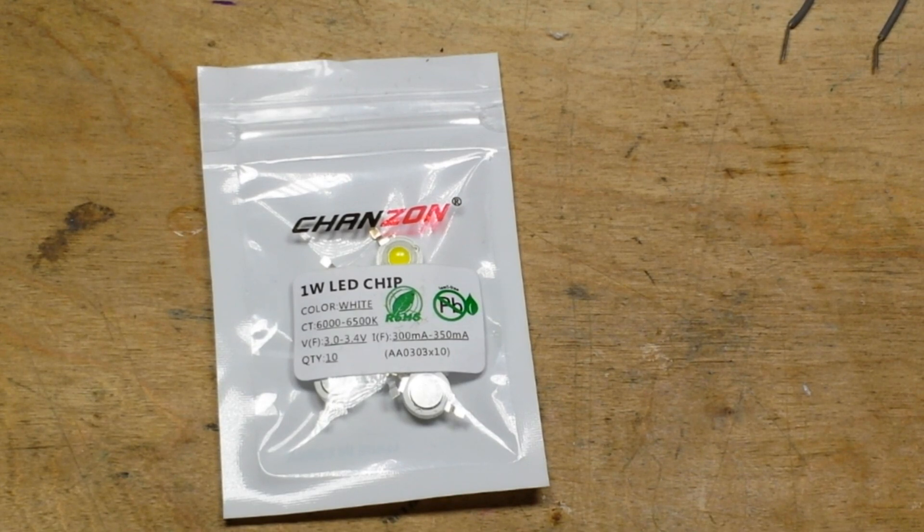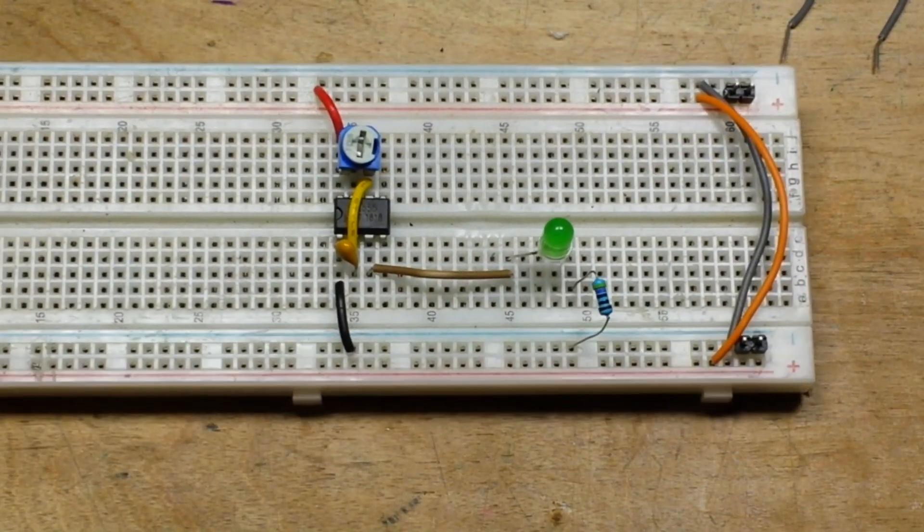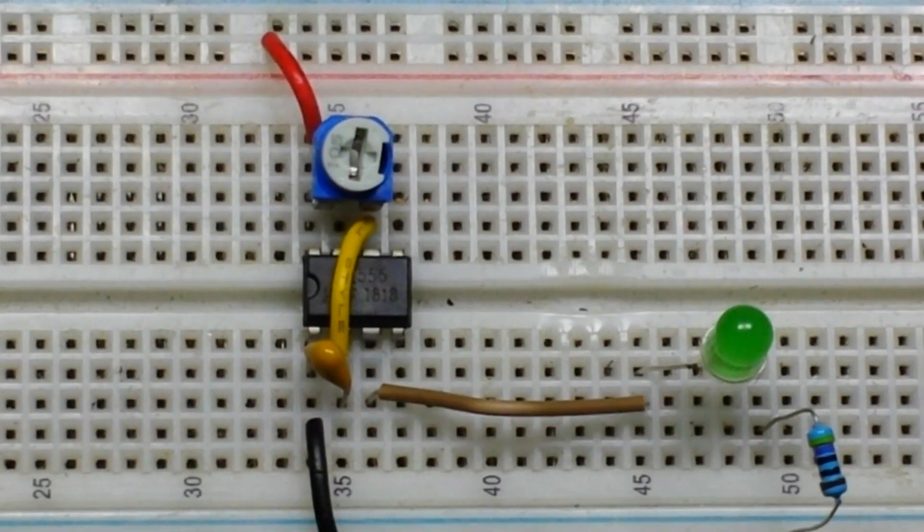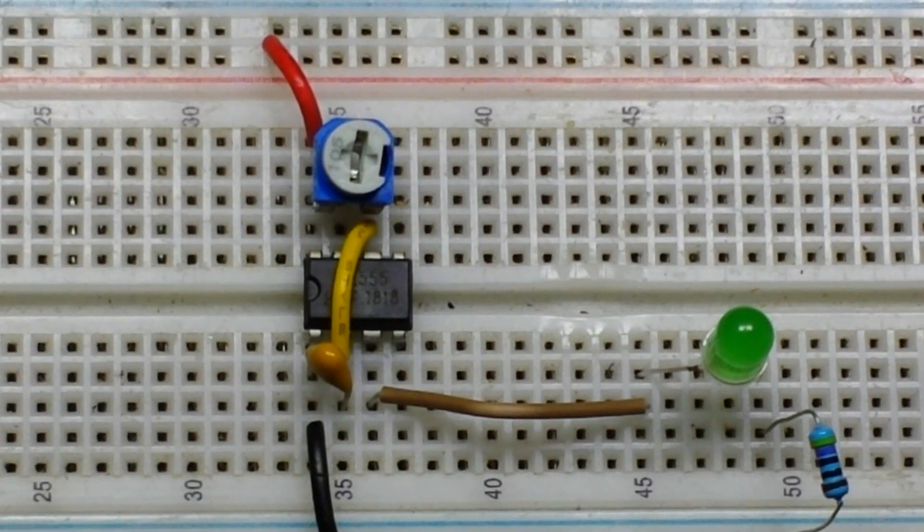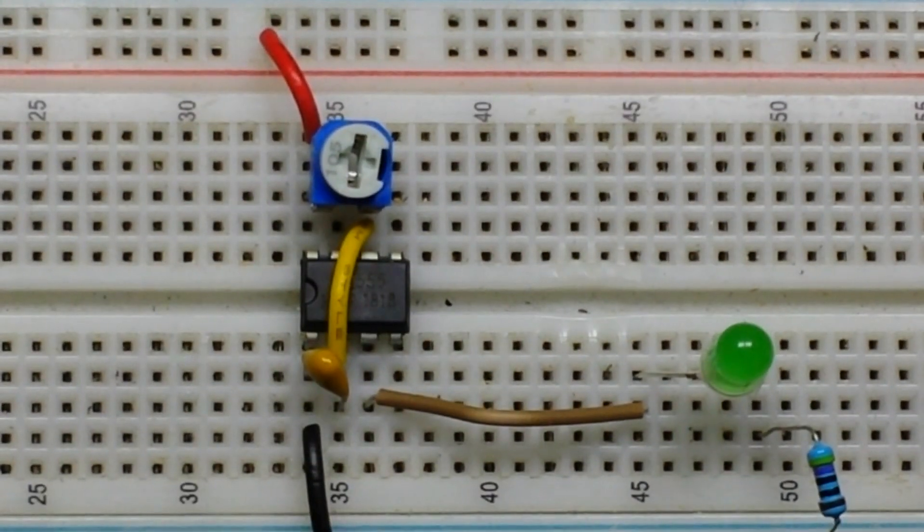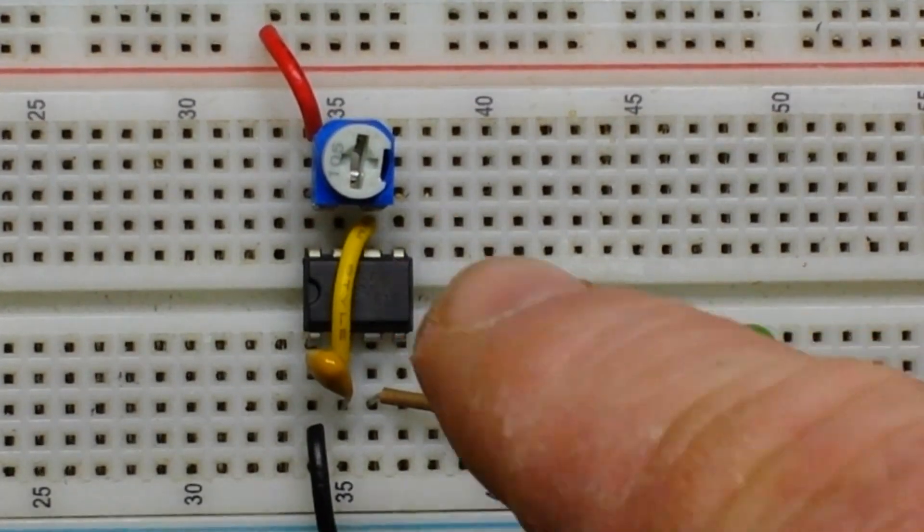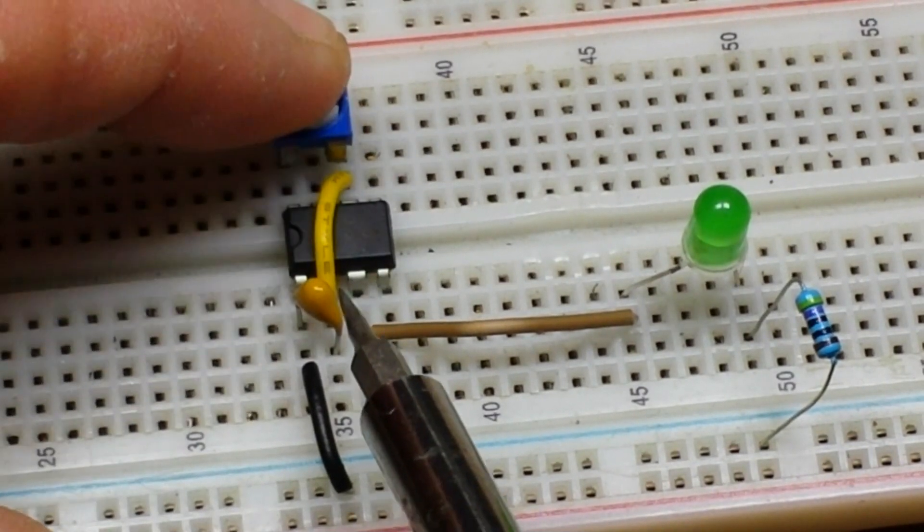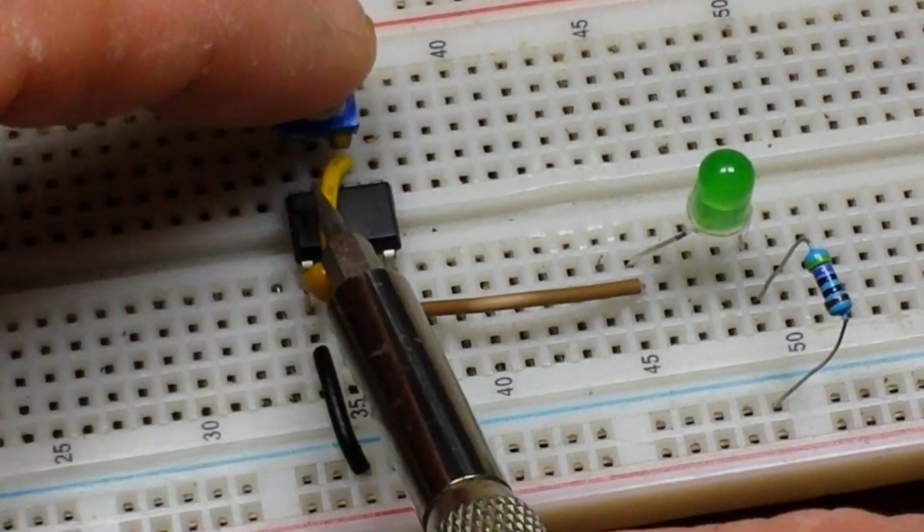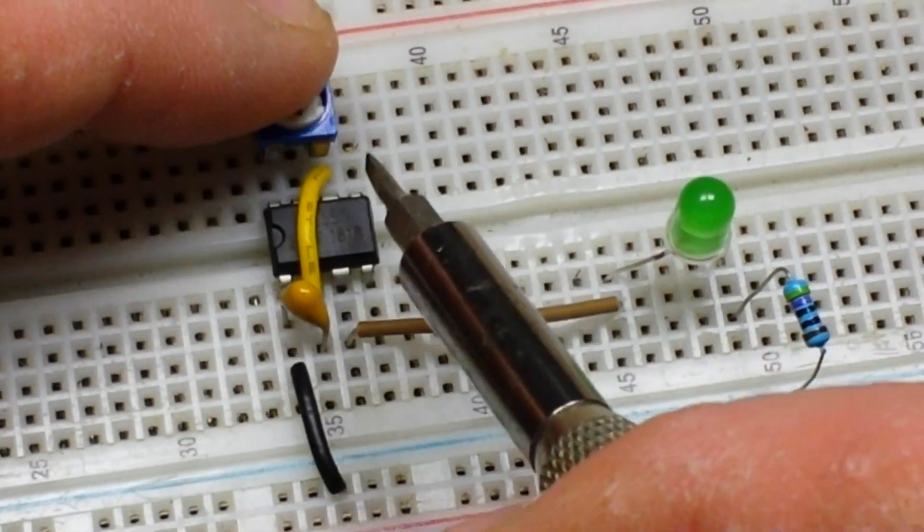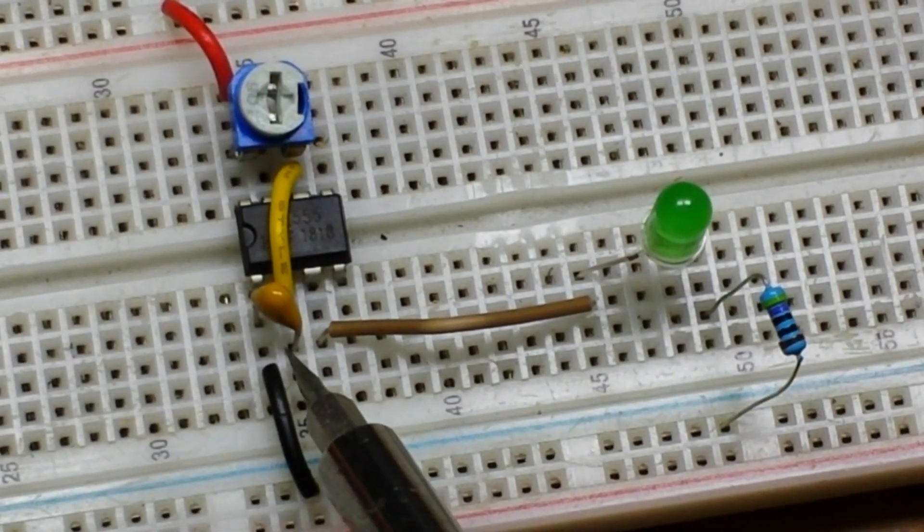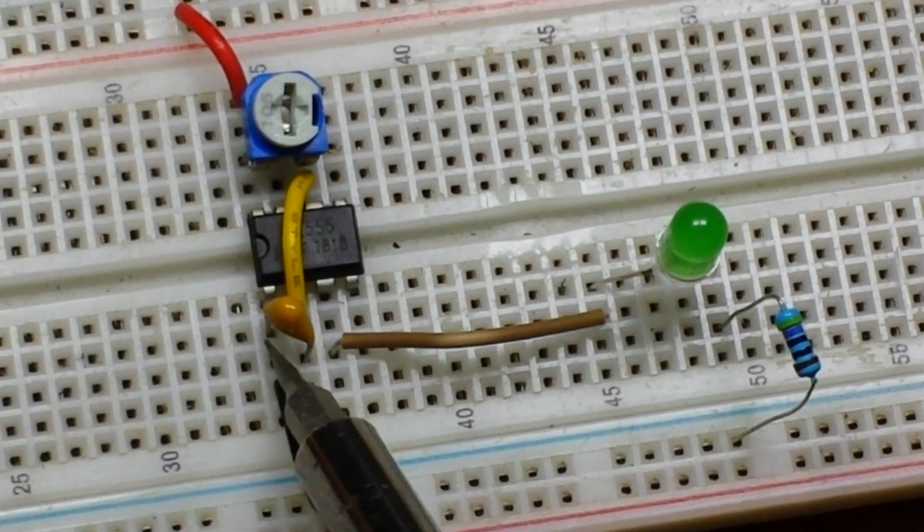Alright, so we need an oscillator first of all to turn our strobe light on and off. How are we going to do that? Well, let's bring in my all-time favorite IC, the 555 timer. And here it is set up in my super simple 555 timer setup. You just take a potentiometer and put it between pins 8, 7, and 6. You wire pin 6 to pin 2, put a capacitor between pins 1 and pin 2.